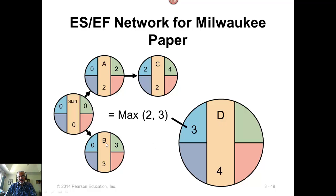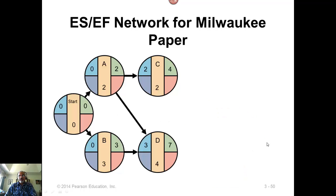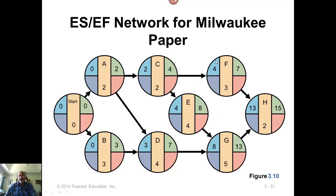Now D comes after A and B, so you have to look at the earliest finish time of A and the earliest finish time of B, and the larger of the two will be the earliest start time for D. So 3 plus 4 equals 7. F has only one arrow coming in, so 4 is the start time for F, plus 3 is 7. Only one arrow coming into E, so 4 plus 4 is 8. Here there are two arrows coming in, so you select the maximum between the two, which is 8, and 8 plus 5 is 13. And here again two arrows come in — the maximum of 7 and 13 is 13, and 13 plus 2 is 15. That is the finish time of H and the project completion time.